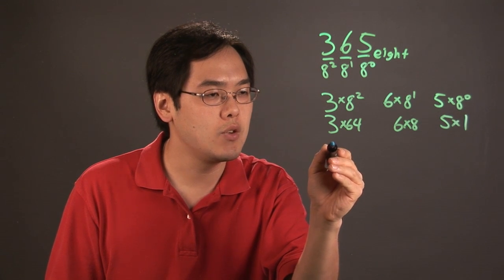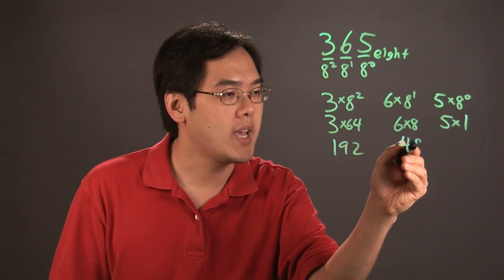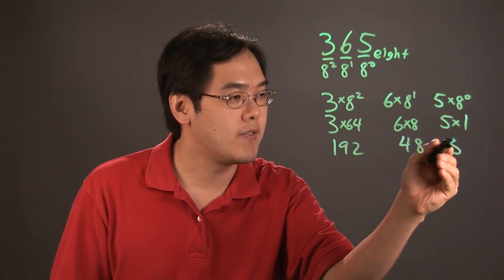Now, 3 times 64, that's going to give you 192. 6 times 8 is 48. And then 5 times 1 is going to give you 5.